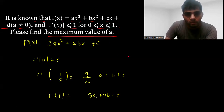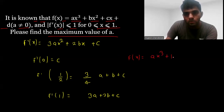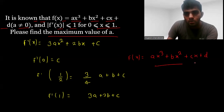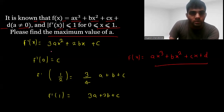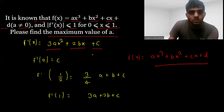We are given f(x) = ax³ + bx² + cx + d. If you differentiate it, you will get f'(x) = 3ax² + 2bx + c.